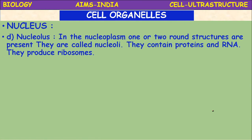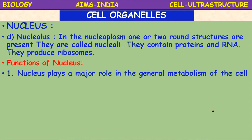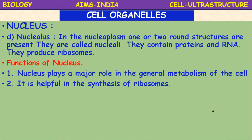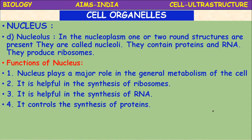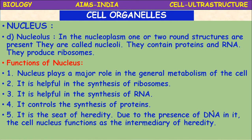Nucleolus: in the nucleoplasm, one or two round structures are present called nucleoli (nucleolus is singular, nucleoli is plural). They contain proteins and DNA and produce ribosomes — ribosomes are produced from the nucleolus of the cell.